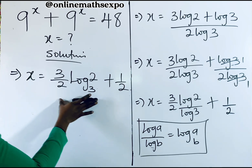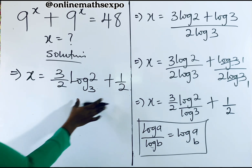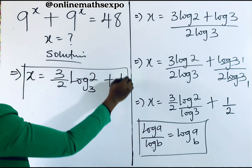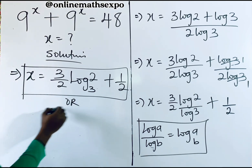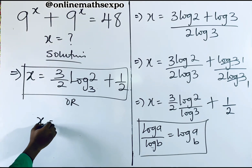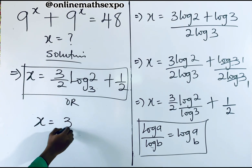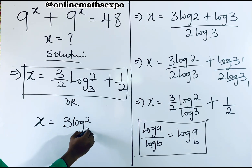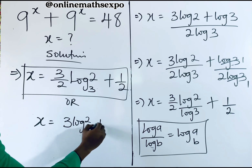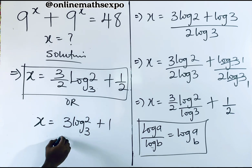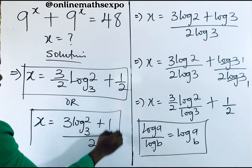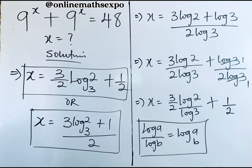This gives us the value of x. You can also write it as x equals 3 log base 3 of 2 plus 1, all divided by 2. Either of these two forms is correct.